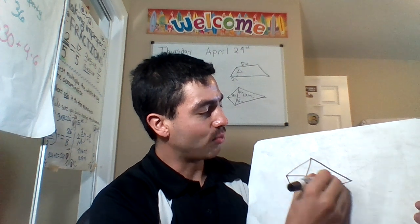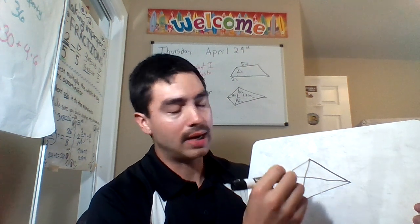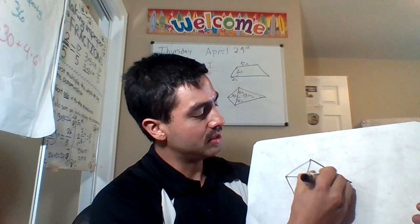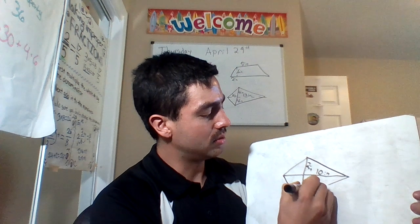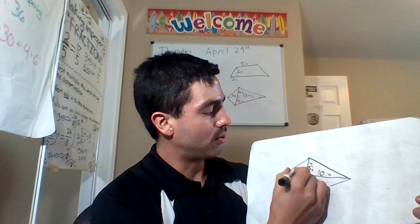It's made up not of one, not two, not three, but four triangles. So let's say this is ten inches. This is two inches. This is two inches. And this is four inches.